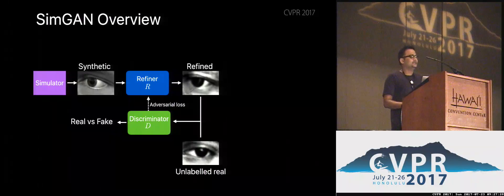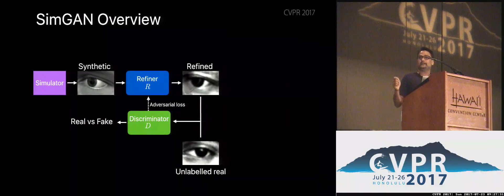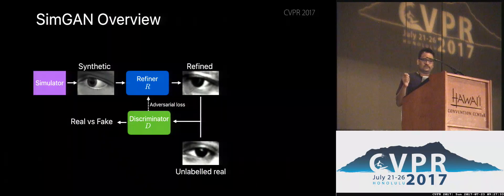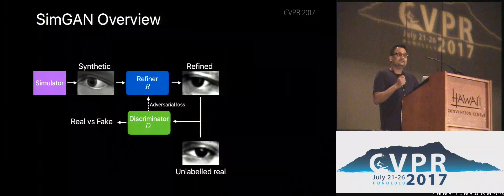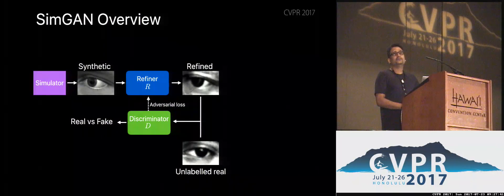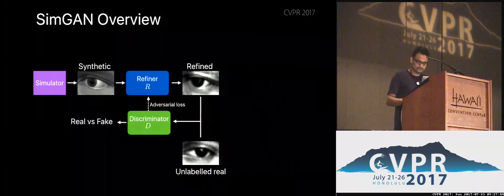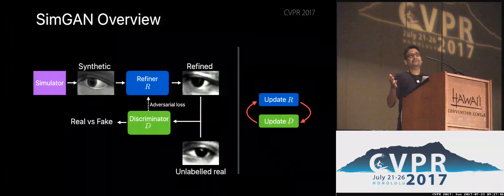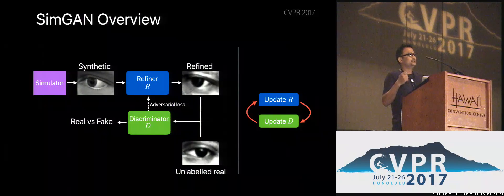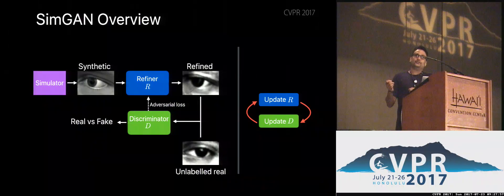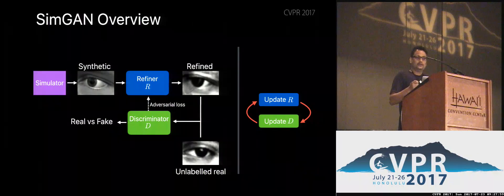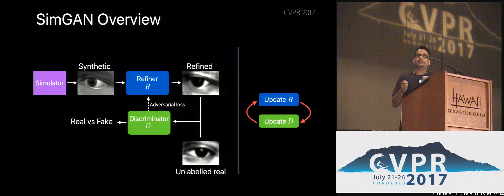The discriminator's job is to distinguish real images from refined images as well as possible. The refiner's job is to fool the discriminator into thinking the refined images are real. If we have a very good discriminator and the refiner can fool it successfully, then essentially we would have generated images that appear to come from the real data distribution. We train the discriminator and refiner in alternating fashion: update the refiner, get fake images, use them to update the discriminator, then use the discriminator to update the refiner's parameters.